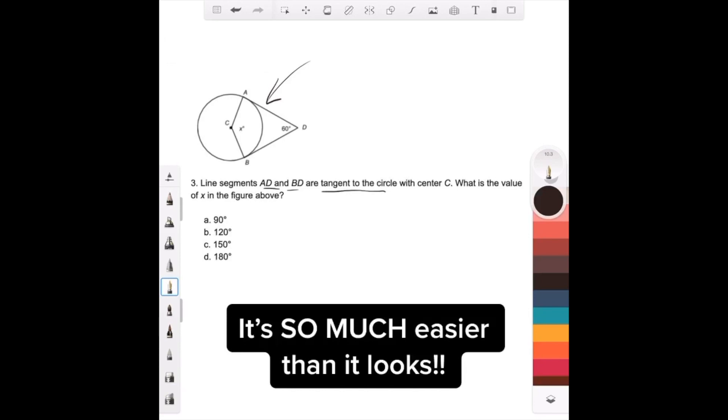If we have AD and we have BD and they're tangent to the circle, here's all that means: if you draw a line here to the center, this is 90 degrees, that's all it means. And if you draw a line here to the center of the circle, that's 90 degrees. That's all it means.